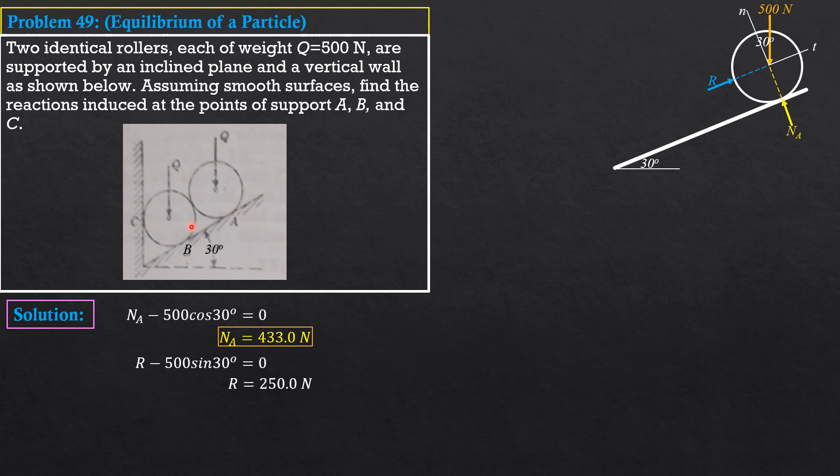We then draw the second roller B, and put the action forces, 500. Then R, 250, which makes 30 degrees with horizontal. Then, NB and N sub Z, horizontal, as shown. Then, the angle here is also 30 degrees.